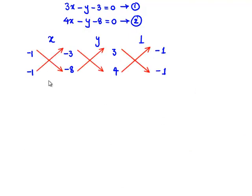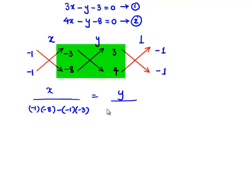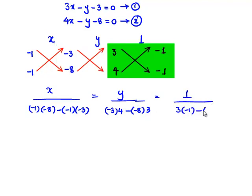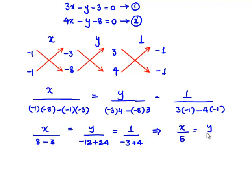By the cross multiplication method, we write: x / [(−1)(−8) − (−1)(−3)] = y / [(−3)(4) − (−8)(3)] = 1 / [(3)(−1) − (4)(−1)]. Simplifying: x / (8 − 3) = y / (−12 + 24) = 1 / (−3 + 4), which gives x/5 = y/12 = 1/1.